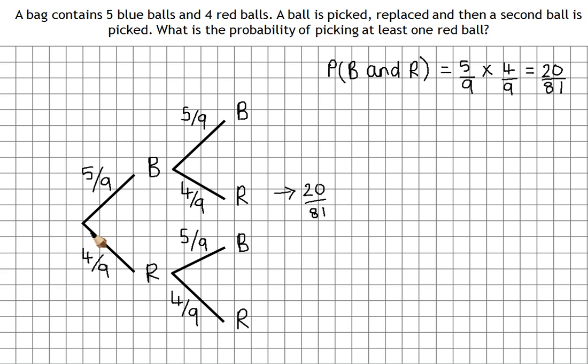Now this branch here, red then blue, we have to include that one. So again that's going to be four ninths times five ninths. So four times five is 20, nine times nine is 81.